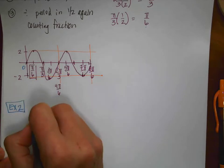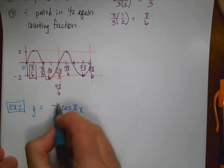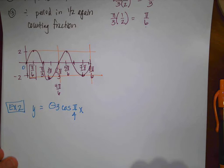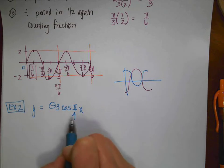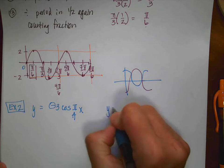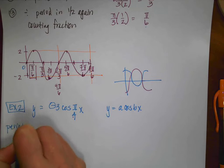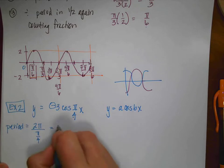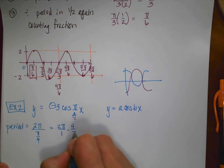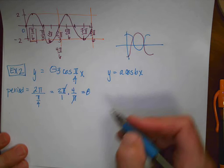Example 2: graph y = -3·cos(πx/4). The negative means a reflection across the x-axis, so instead of cosine starting high, it's going to start low. The amplitude is 3 and b is π/4. The period is 2π divided by π/4. A fraction divided by a fraction means multiply by the reciprocal: 2π/1 × 4/π — the π cancels, giving a period of 8. It doesn't have to have π as part of the period.